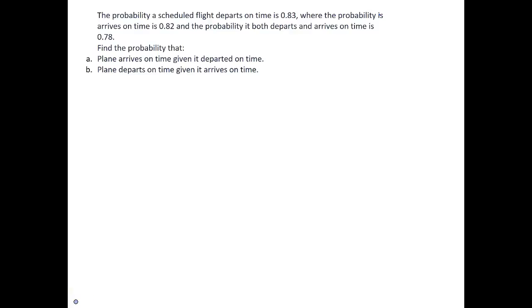Suppose the probability a scheduled flight departs on time is 0.83, the probability it arrives on time is 0.82, and the probability it both departs and arrives on time is 0.78. Let's find the probability that the plane arrives on time given it departed on time, and find the probability the plane departs on time given it arrives on time.